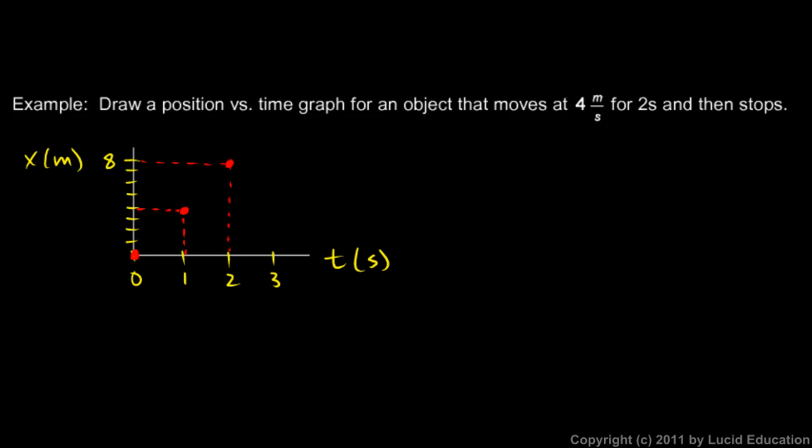So if it's moving at a steady speed for those 2 seconds, the graph will be a straight line right there. And then if it stops, the graph levels off.